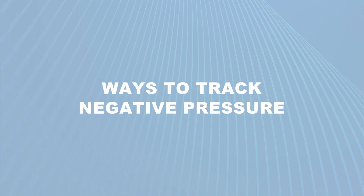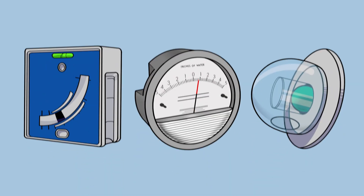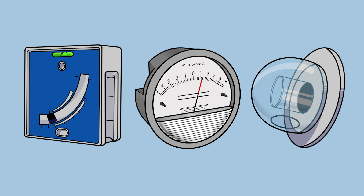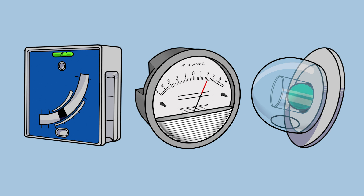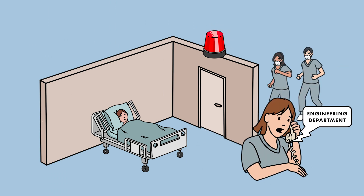There are several ways to track negative pressure. One way is through the building automation system using room pressure monitors. Other methods include local room pressure monitors, a manometer, or visual-based devices such as a ball in the wall. Whatever the method, it is essential to ensure that your staff is thoroughly trained on their role and knows what to do if a room shifts from negative to neutral or positive pressure.